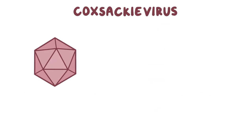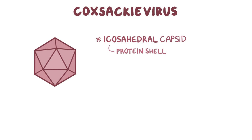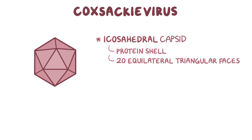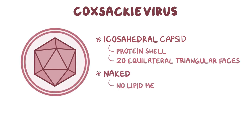Coxsackievirus is surrounded by an icosahedral capsid, which is a spherical protein shell made up of 20 equilateral triangular faces. Nonetheless, it's a naked virus because the capsid isn't covered by a lipid membrane.